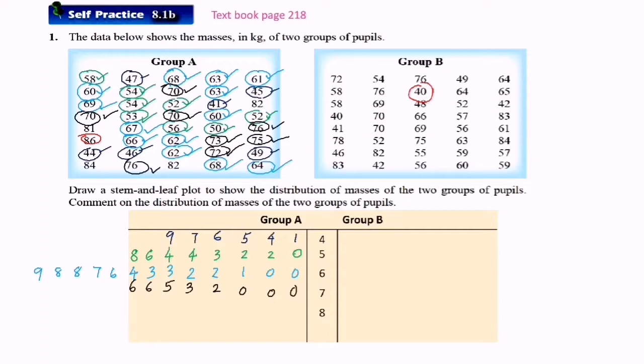So the last one is 80 to 89. So I have one 81 here. 82, and 82, so two 2s. 84, and the last one 86.